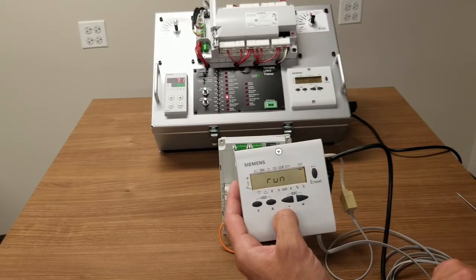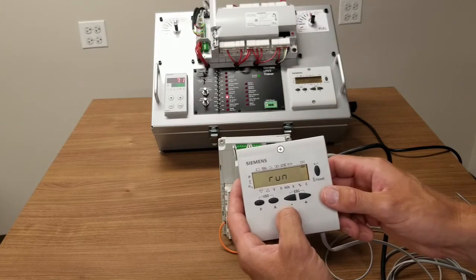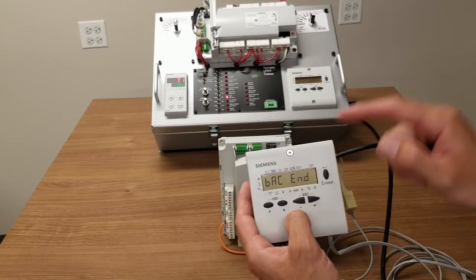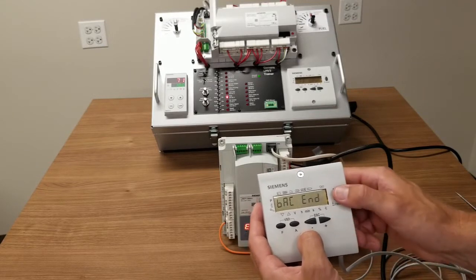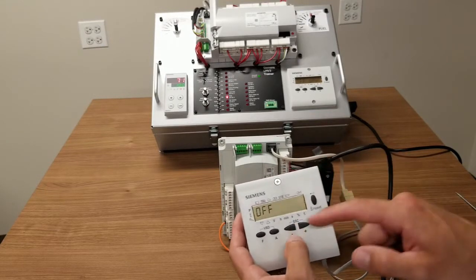You'll see the display shows run for a moment. And when it's completed, it will say back end. And I've now saved that new purge time to this program module. Now I can simply hit enter and I'm back to off.